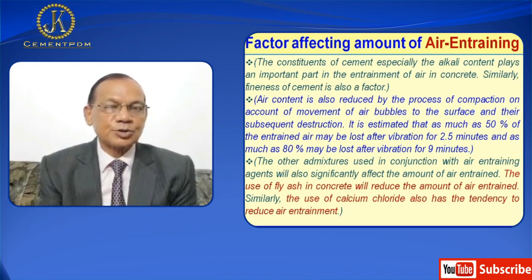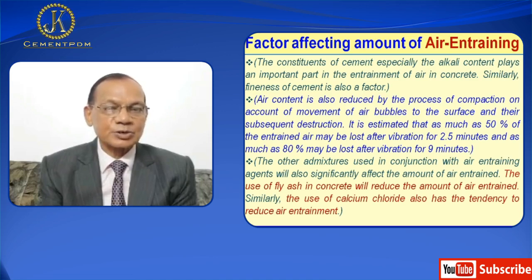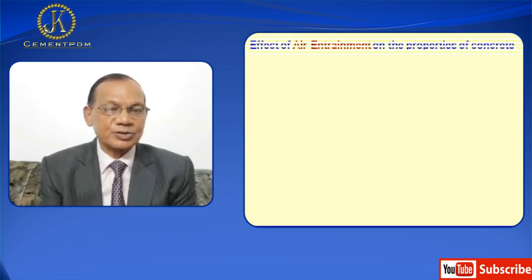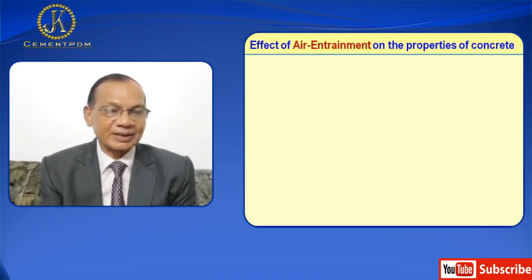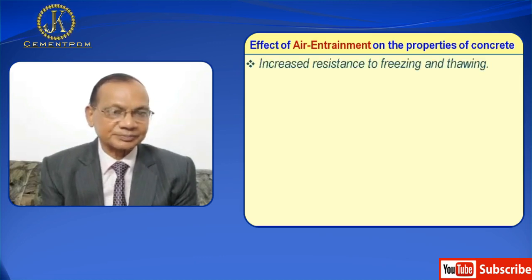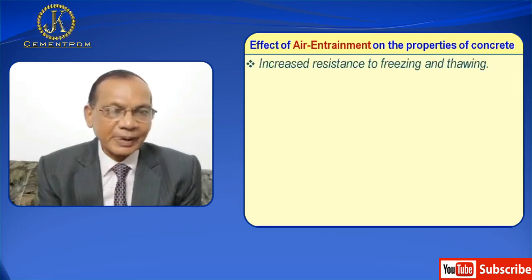Other admixtures used in conjunction with air entraining agents will also significantly affect the amount of air entrainment. The use of fly ash in concrete will reduce the amount of air entrainment. Similarly, the use of calcium chloride also has the tendency to reduce air.